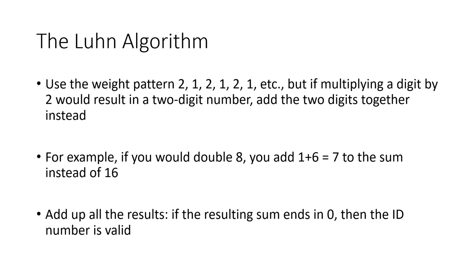The Luhn algorithm uses the weight pattern 2, 1, 2, 1, and so on. But if multiplying by 2 results in a two-digit number, instead of adding that two-digit number, we add its two digits together. For example, doubling an 8 gives 16, but instead of adding 16, we add 1 plus 6, which is 7. Then we add all results and check if the sum ends in 0.